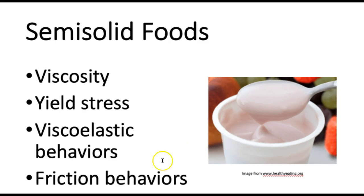We can also look at friction behaviors for semi-solid foods in the same way we did for fluid foods — checking if there are any particles making our yogurt a little chalky or gritty. That's not a great texture for yogurt, so we want to check that out and see if we can pick up something in friction that tells us there's some behavior we weren't expecting that might not translate to a palatable texture for our consumer.